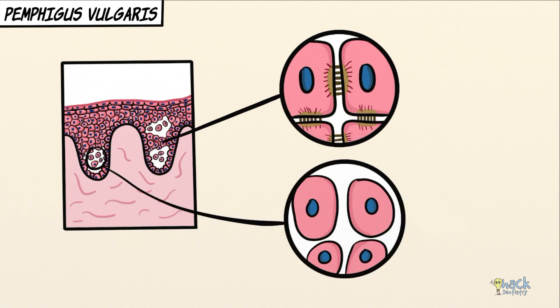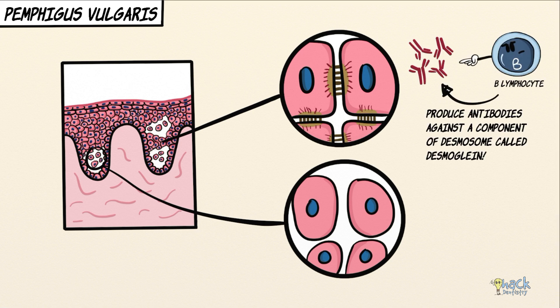In pemphigus vulgaris, the body's B cells produce autoantibodies against certain components of the epithelium. These autoantibodies, predominantly the IgG4 subtype of the IgG antibody, attack a specific component of the desmosome called desmoglein.